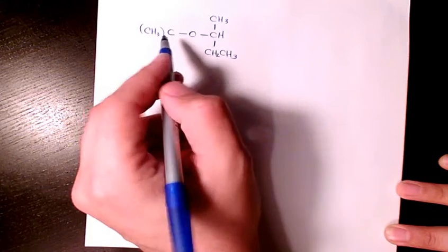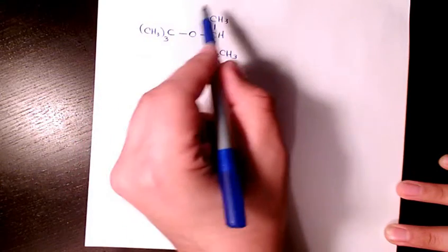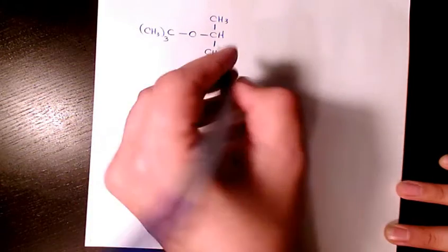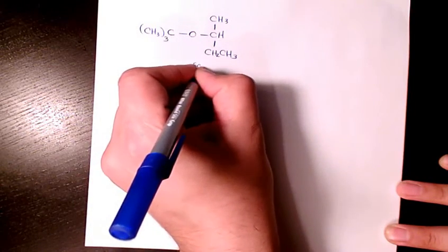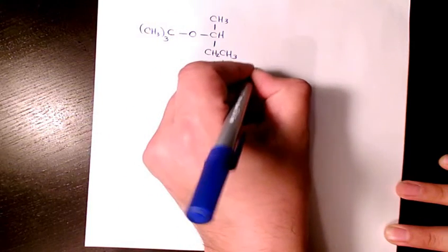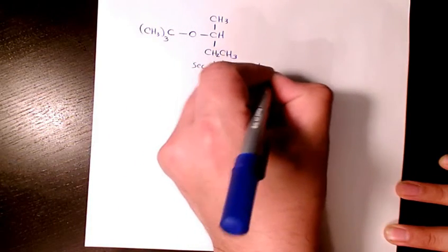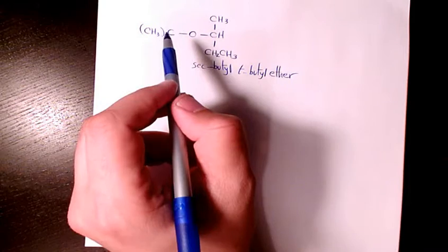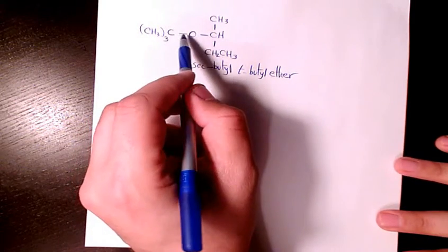So s comes before t, so I'm gonna say secondary butyl tertiary butyl ether. That's the common name. And if you want to have the IUPAC name, we have...